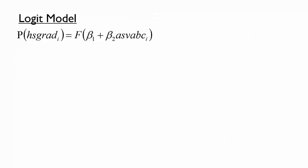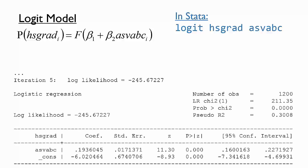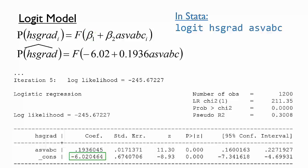Let's try estimating a logit model in Stata. Just like an OLS regression, we must specify a dependent variable and one or more independent variables. The command is logit followed by the dependent variable and any independent variables. Here is Stata's output. Much of it looks quite similar to the output for an OLS regression, although there are some differences we will discuss in the future. Note that the output still contains a coefficient for ASVAB C, which is the estimate of beta2, and a constant, or intercept, which is the estimate of beta1. Just as in a linear probability model, we can use these estimates to calculate a predicted probability of having a high school diploma.